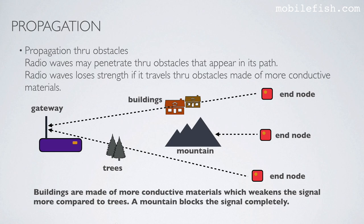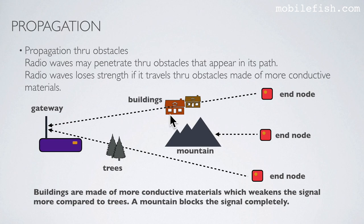There is also propagation through obstacles. Radio waves may penetrate through obstacles that appear in their path, but lose strength when traveling through obstacles made of more conductive materials. Looking at this picture, we have three end nodes: in one case signals go through buildings, in another they go through trees, and in the third case there is a mountain between the end node and the gateway. Buildings are made of more conductive materials which weakens the signal compared to trees. A mountain blocks the signal completely.